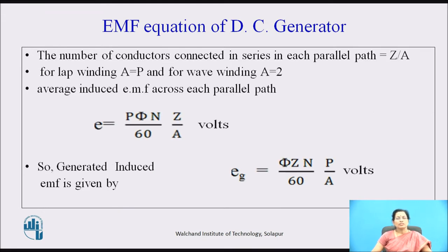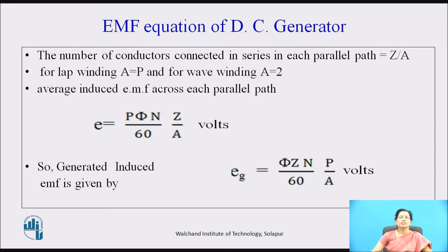The number of conductors connected in series in each parallel path is given as Z by A. For lap winding, the value of A is P, that is equal to the number of poles, and for wave winding A equals 2. The average induced EMF across each parallel path is given as P·phi·N by 60 into Z by A, in volts.